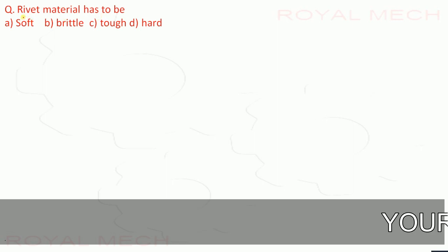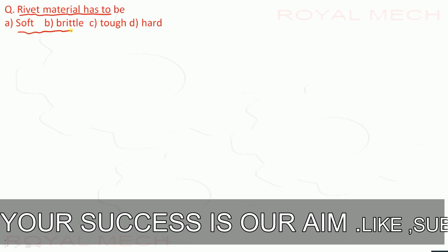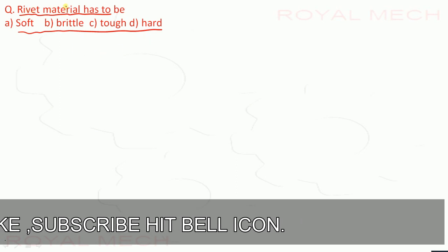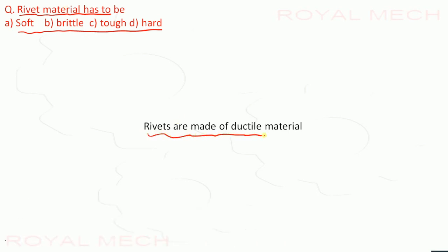Rivet material has to be: soft; brittle; tough; or hard. Rivets are made up of ductile material. Brittle is not ductile, toughness is not ductile, and hardness is not ductile. Ductile materials are also called soft materials. Therefore option A, soft, is the correct option.